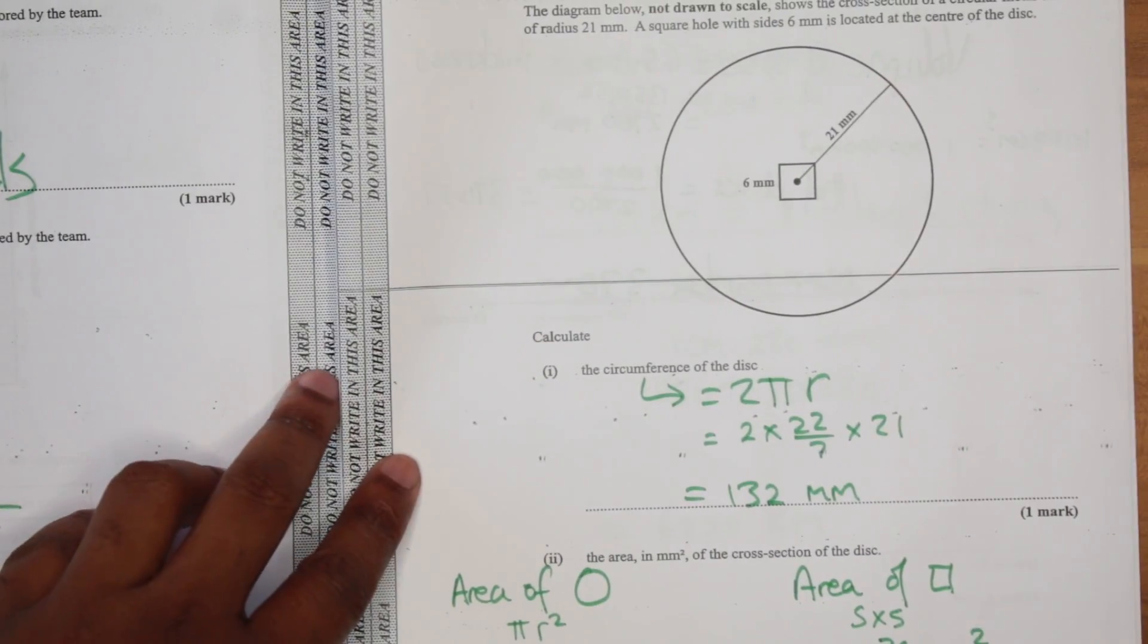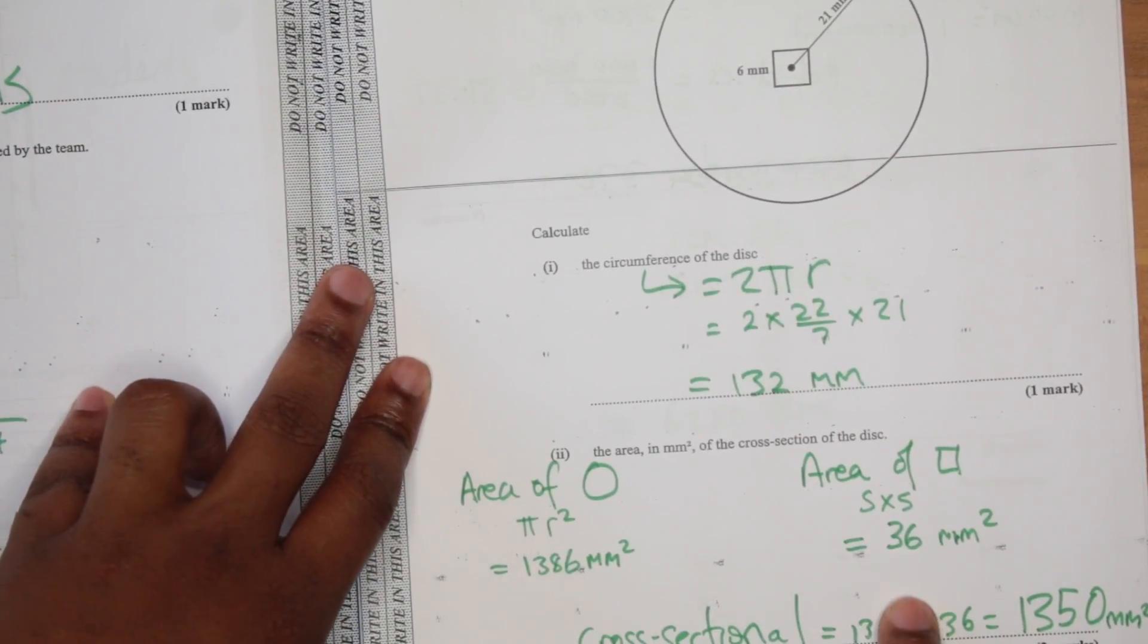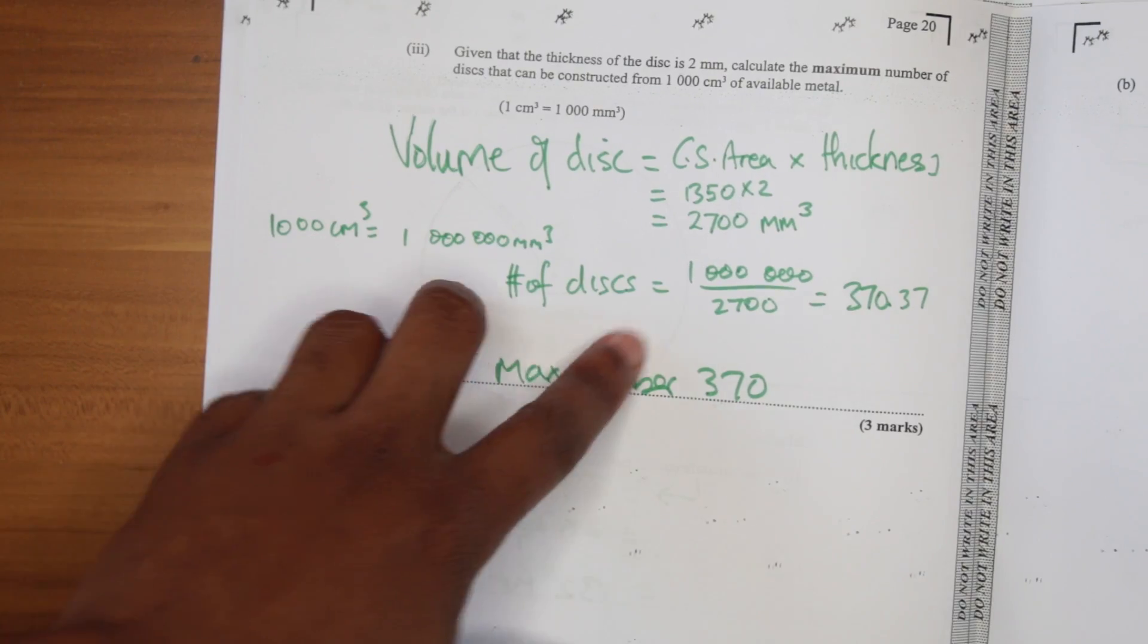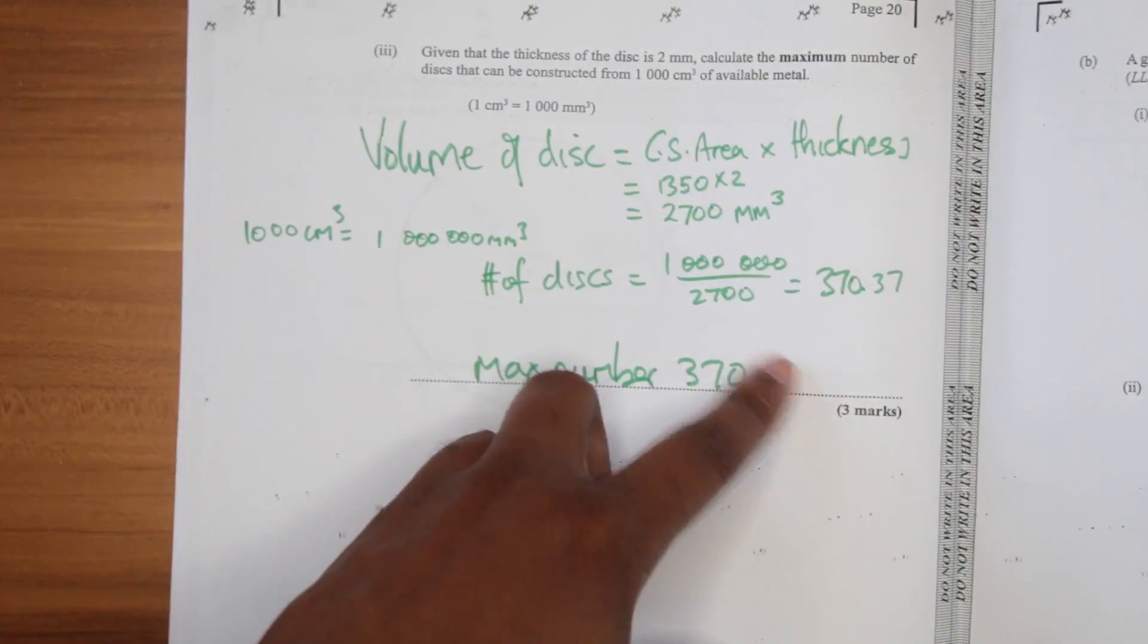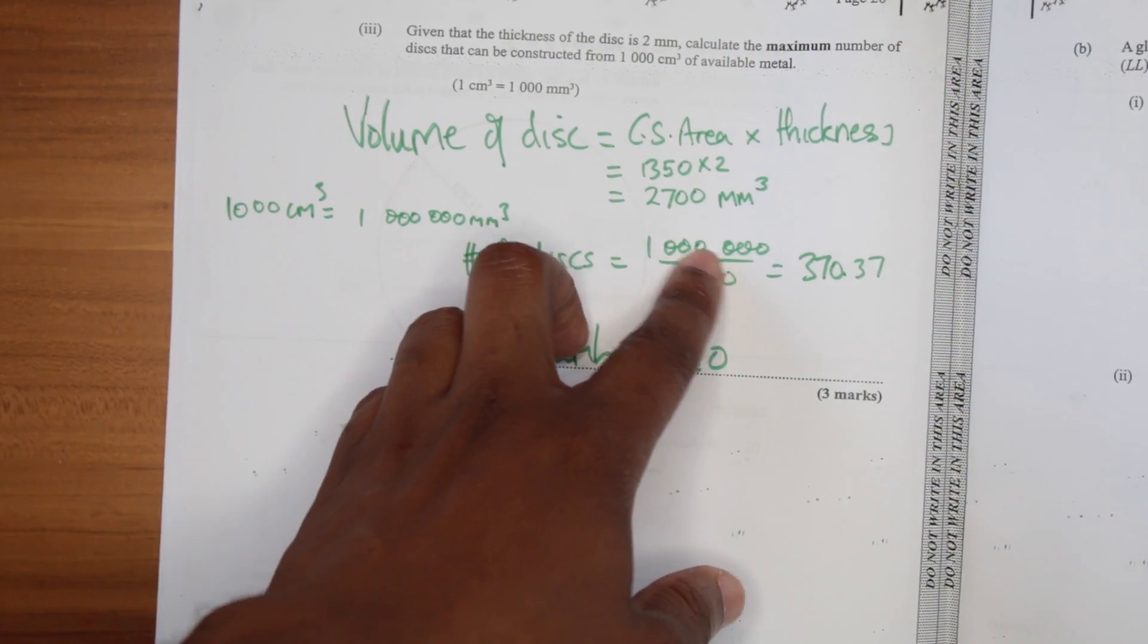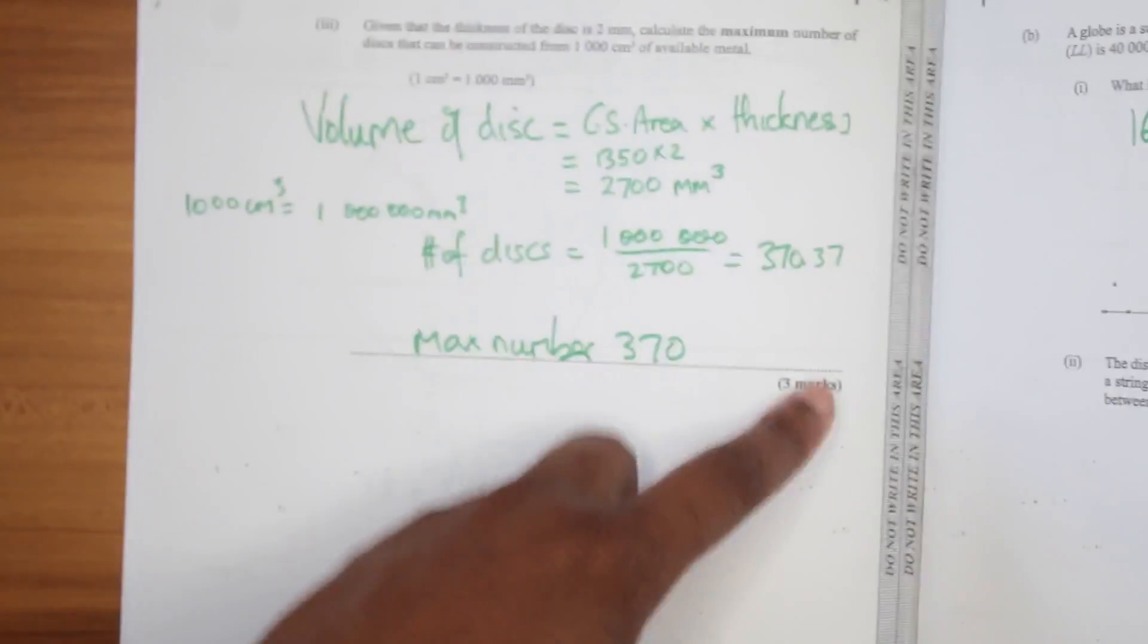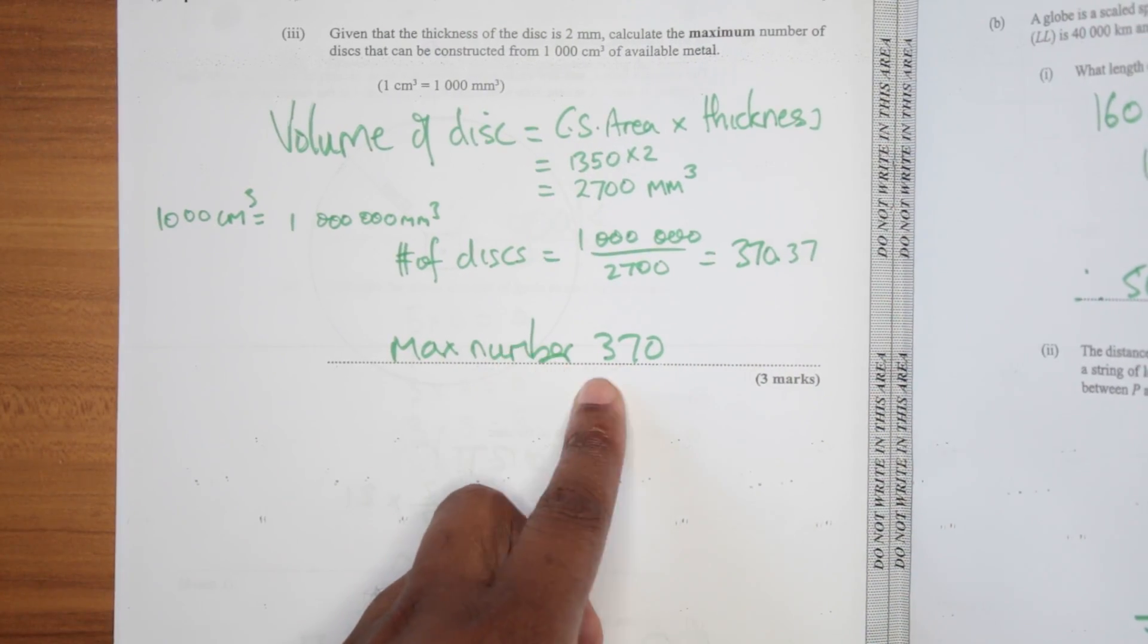And then we had some circle. Finding the area. Area of the square. Minus. Get the cross sectional area before you do a little circumference stuff. Then this was the tricky part. You need to know the cross sectional area by the thickness will give you the volume. Then you divide the volume of the material by the volume of one disc to get how much disc you need. And you know you round down. So the maximum number of discs we could get is this.